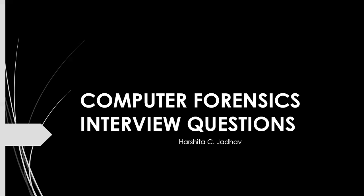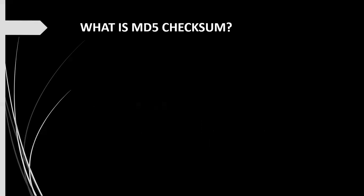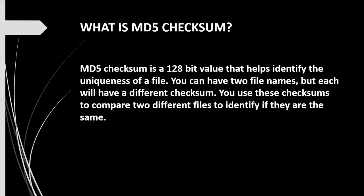Today we are going to discuss 25 interview questions to help you prepare for your next computer forensic interview. Our first question is: what is MD5 checksum? MD5 checksum is a 128-bit value that helps identify the uniqueness of a file. You can have two file names but each will have a different checksum. You use this checksum to compare two different files to identify if they are the same.